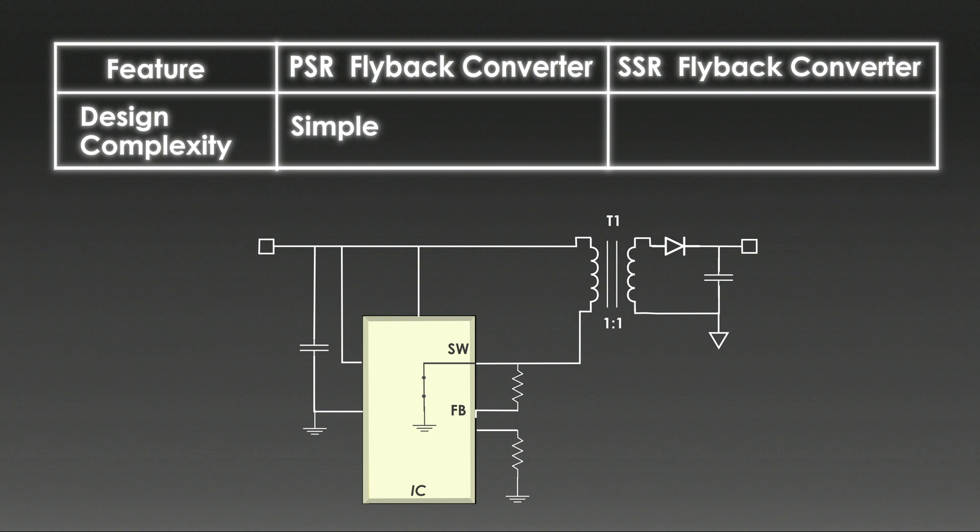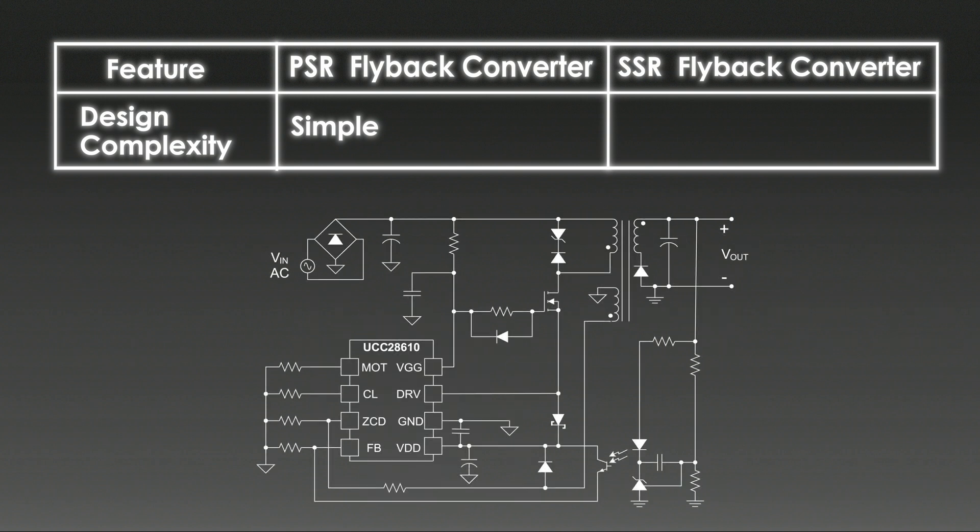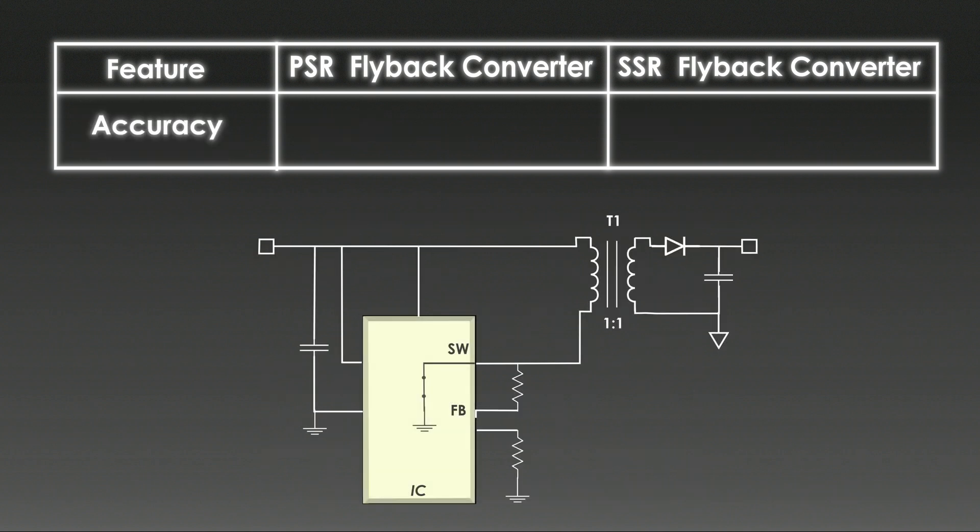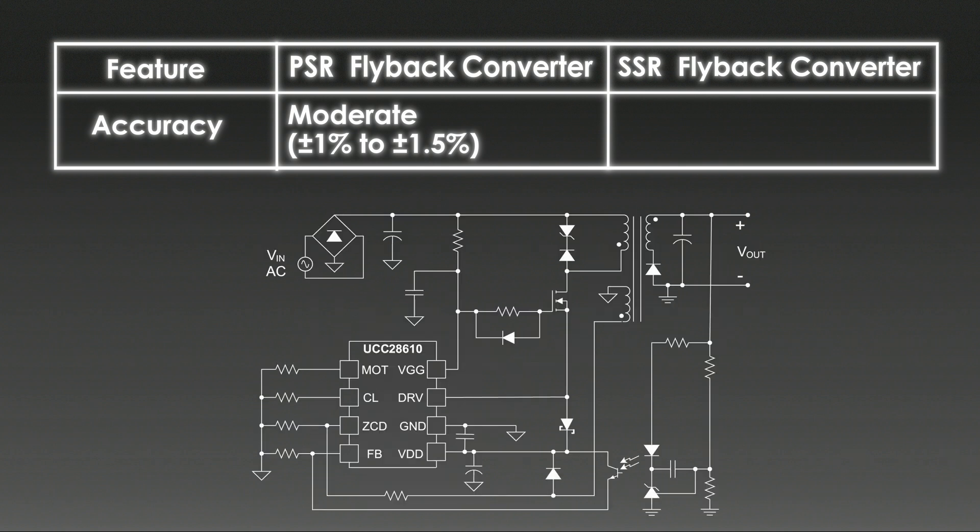The PSR controller integrates all the functionality reducing the component count and PCB size. The SSR flyback converter has more complex design due to additional components like optocoupler or voltage reference circuits and precision resistor on the secondary side. PSR flyback converter typically achieves regulation within 1% to 1.5% accuracy. But it may be less accurate for high output currents or varying load conditions. The SSR flyback converter directly measures the output voltage on the secondary side, allowing for better regulation accuracy, often within 0.5%.